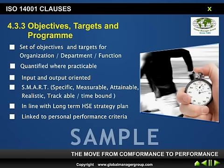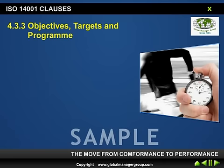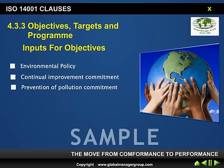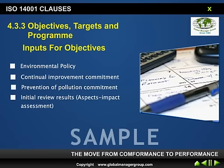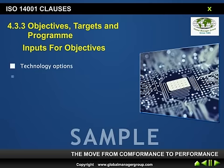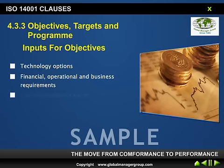You might have the question: what are the inputs to my objectives? The inputs to your objectives are your environmental policy, your continual improvement commitment, your pollution prevention commitment, your initial review results such as aspect-impact assessment, your legal and other requirements — for example, a legal requirement may specify an emission level — your technological options, financial, operational and business requirements, views of your interested parties, and results from your management review.